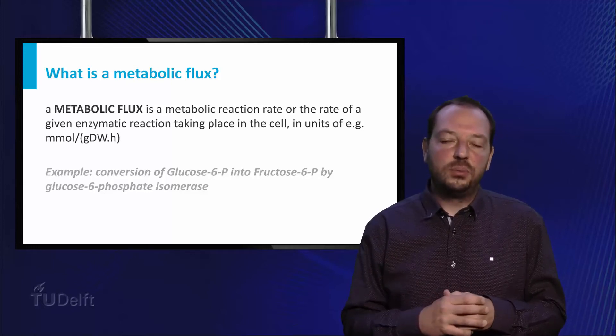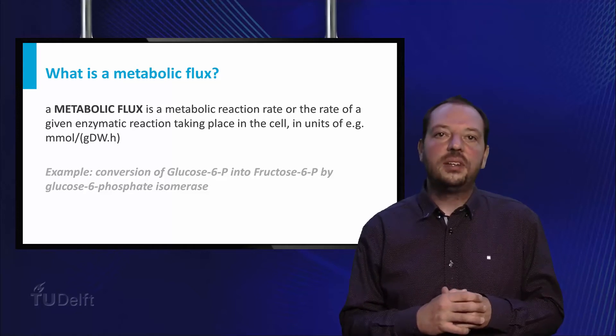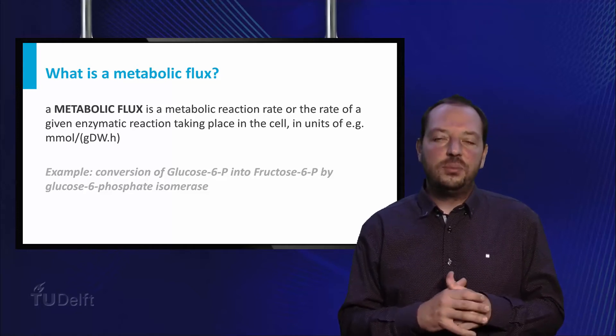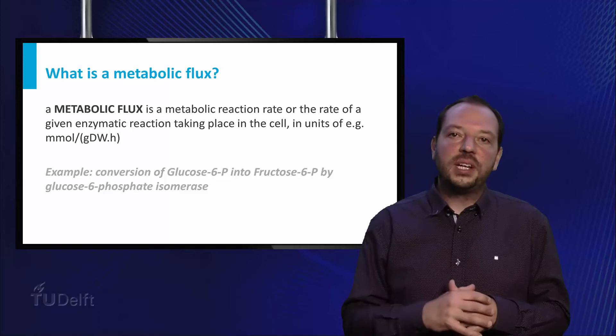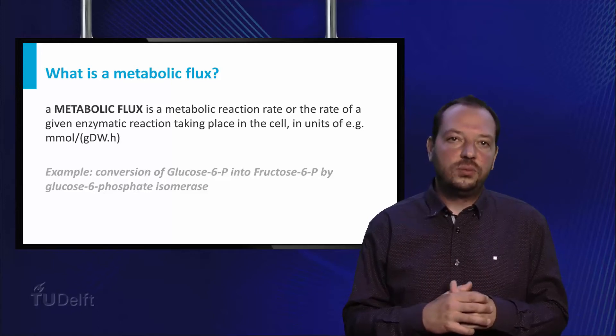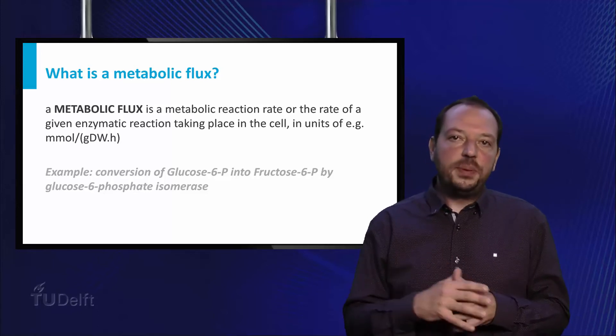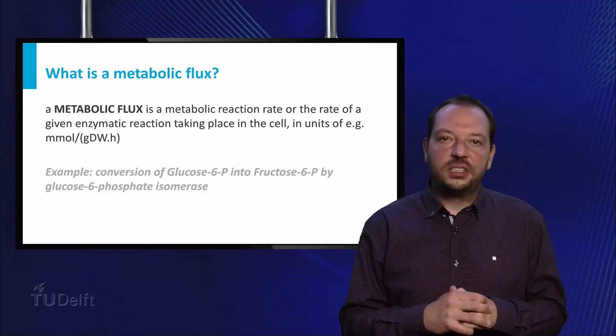For example, the conversion of glucose-6-phosphate into fructose-6-phosphate by glucose-6-phosphate isomerase will be the metabolic flux from glucose-6-phosphate to fructose-6-phosphate. This would be one flux in the cellular reaction network.